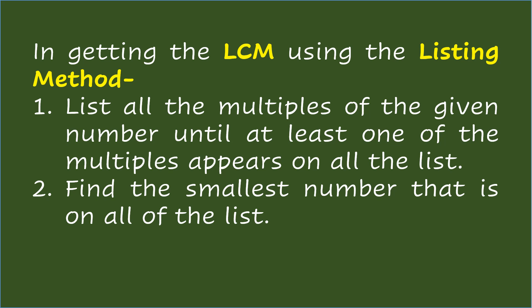In getting the LCM using the listing method, list all the multiples of the given number until at least one of the multiples appears on all the lists. Find the smallest number that is on all of the lists.